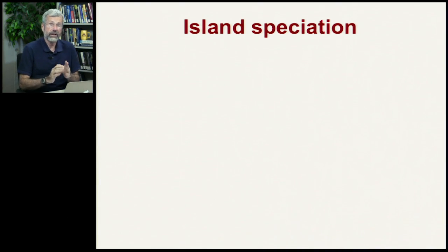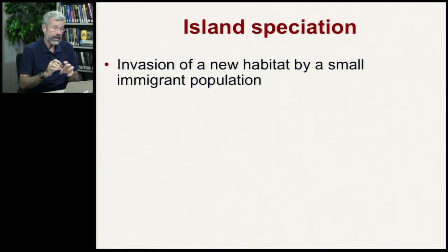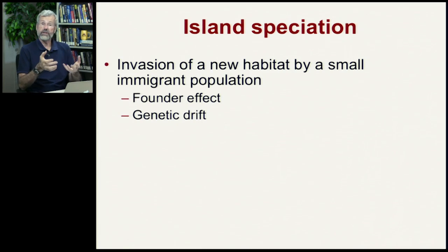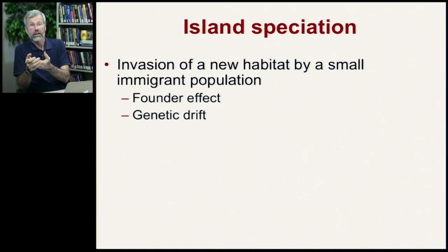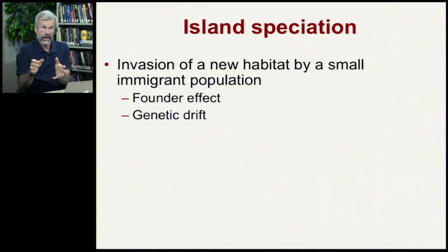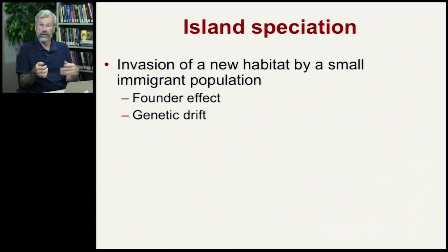A common way that we get speciation is in chains of islands — island speciation. You first get invasion of a new habitat by a small immigrant population. When you have a small population, you might get the founder effect: a non-random genotype arrives in this new habitat, just a few individuals mating with each other. The population may stay small, and each generation certain alleles may get lost — so you have genetic drift.